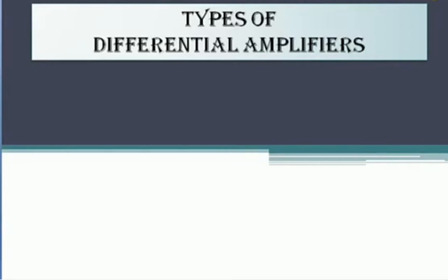In the previous video, you have seen what is a differential amplifier and how the differential amplifier circuit is constructed using BJT. The previous video covered the basic differential amplifier designed using transistors, and that circuit is used in the basic operational amplifier circuit. Once again, just take a glance at that circuit.